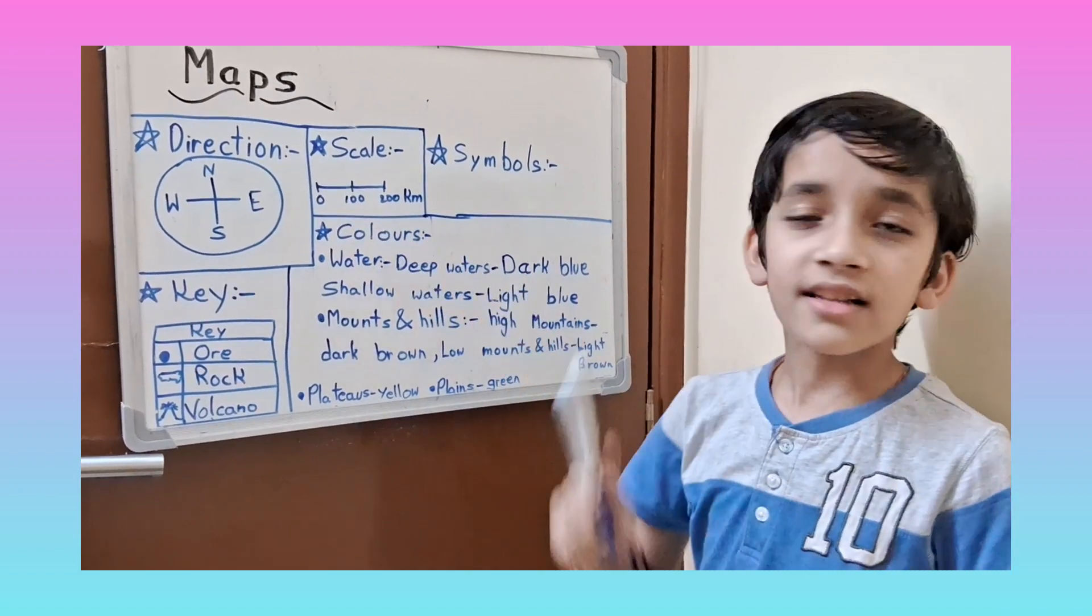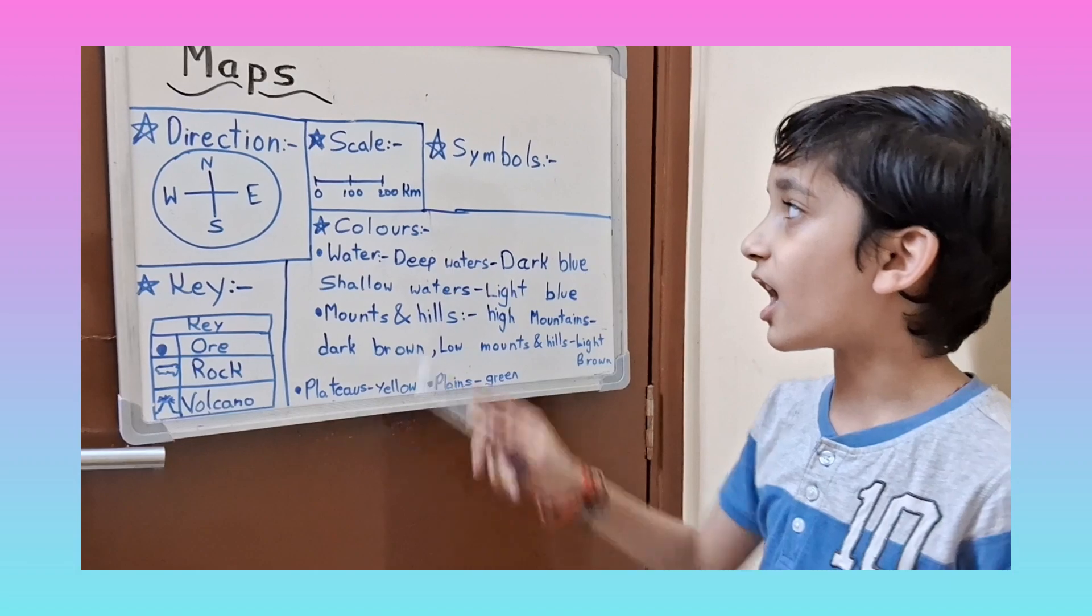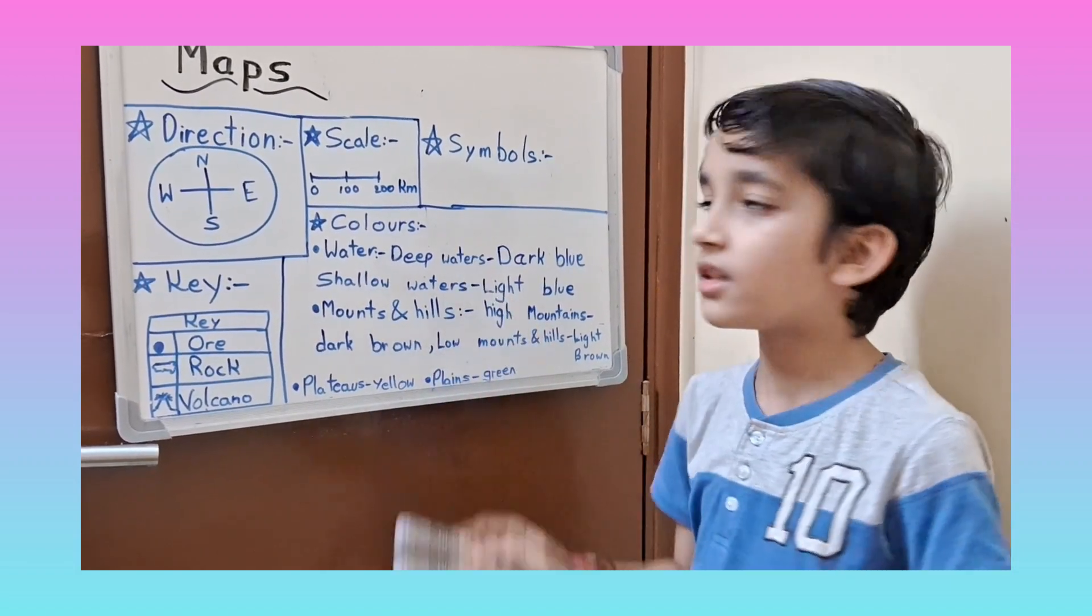Now we will learn about the components of maps. They are direction, scale, symbols, key, and colors.